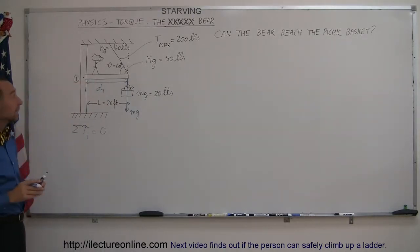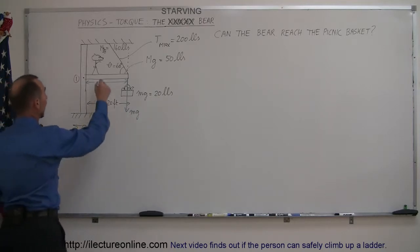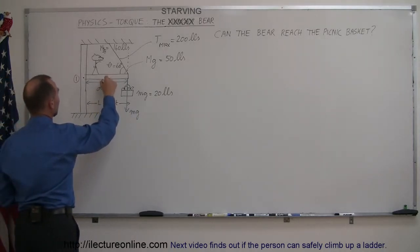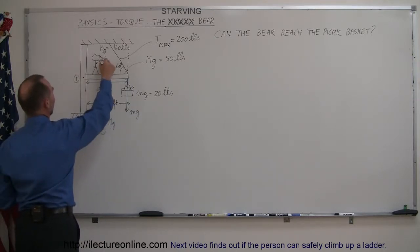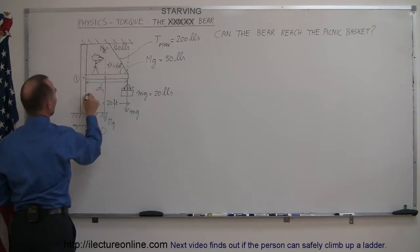The second force would be the weight of the beam which acts at the center mass right there. So it would be this weight right here which is big MG. And then the distance from the pivot point to the line of action of the force, the perpendicular distance, that would be here distance D2.